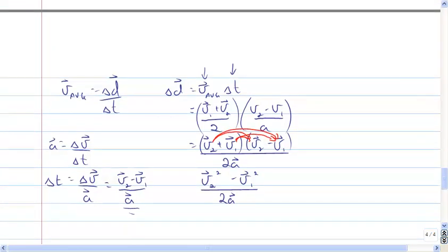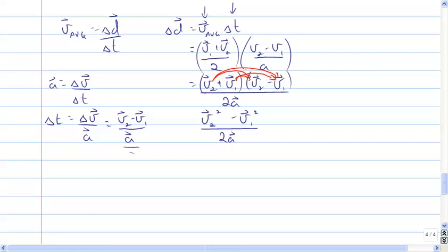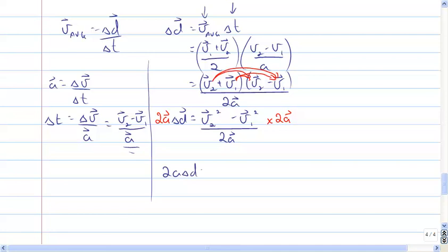So delta D equals V2 squared minus V1 squared, all over 2A. If I multiply both sides by 2A, I get 2A·delta D equals V2 squared minus V1 squared. Rearranging, V2 squared equals V1 squared plus 2A·delta D.